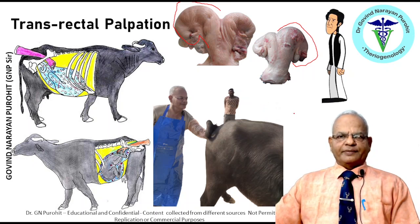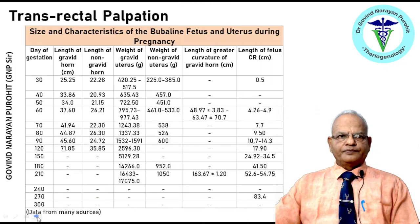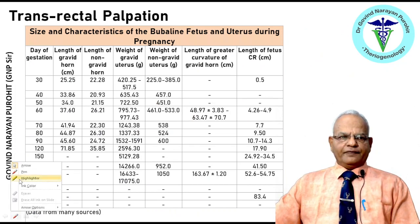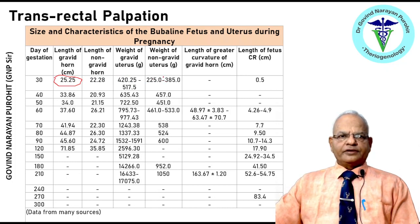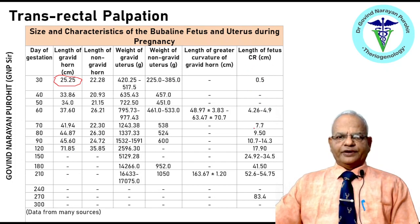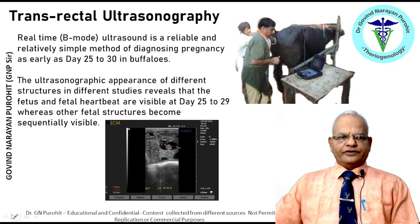Transrectal palpation is a common, easy method that can be used at the farmer's doorstep. Collected data show that at day 30 the length of the gravid horn is approximately 25.25 cm and the non-gravid horn 22.28 cm, with the weight of the gravid horn approximately twice that of the non-gravid horn. The length of the gravid uterus increases with advancing gestation, and the crown-rump length of the fetus can help determine the stage of gestation.